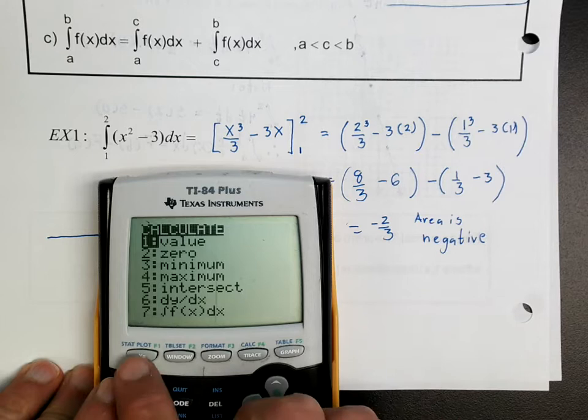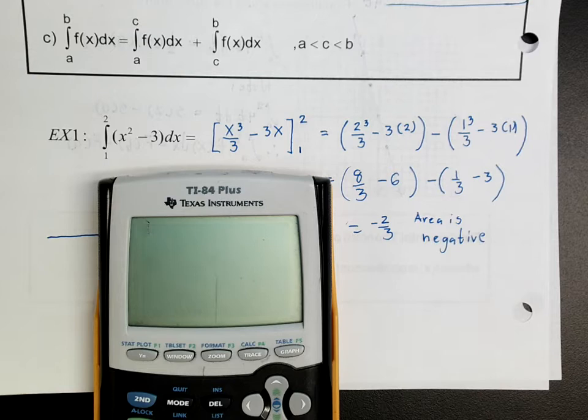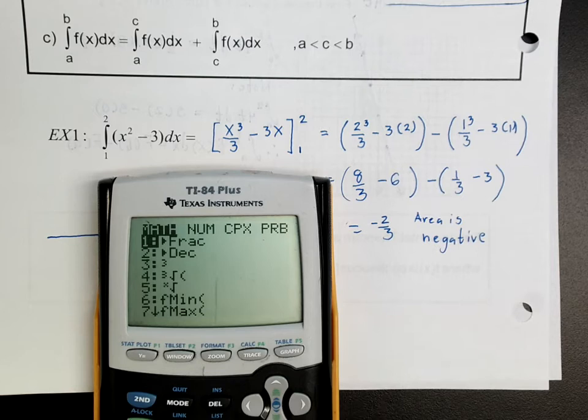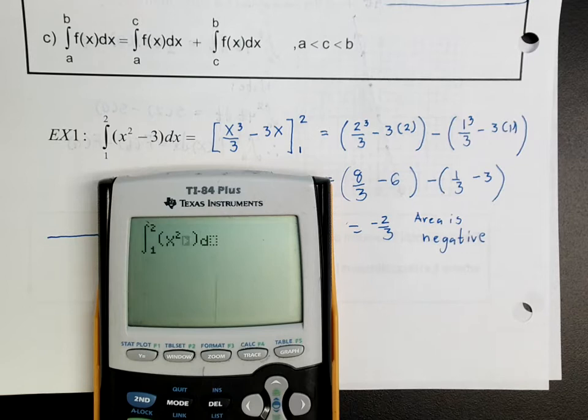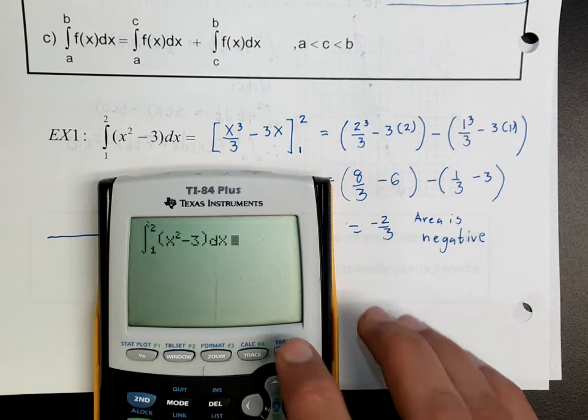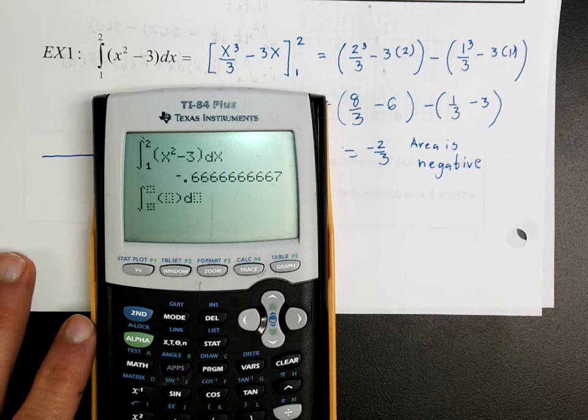There's another way to do this — you can also press math and number 9. Math number 9 gives you the integral directly. Just put in the expression with X and press enter, and there's the answer. I personally kind of like to see the shape, but it's really up to you how you do this.